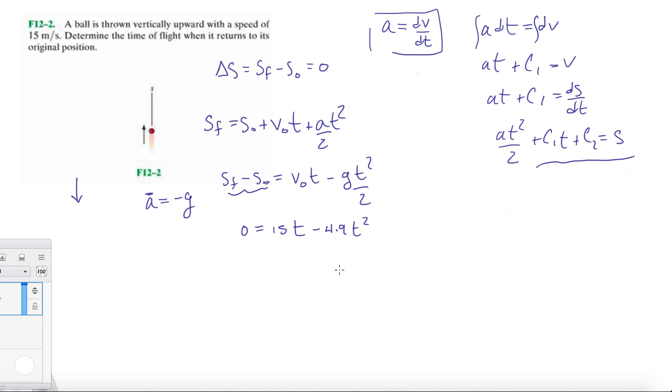When you move everything to one side and isolate t, let's cancel one t. We're going to get 15 divided by 4.9 equals t, which means our time of flight is roughly 3.06 seconds.